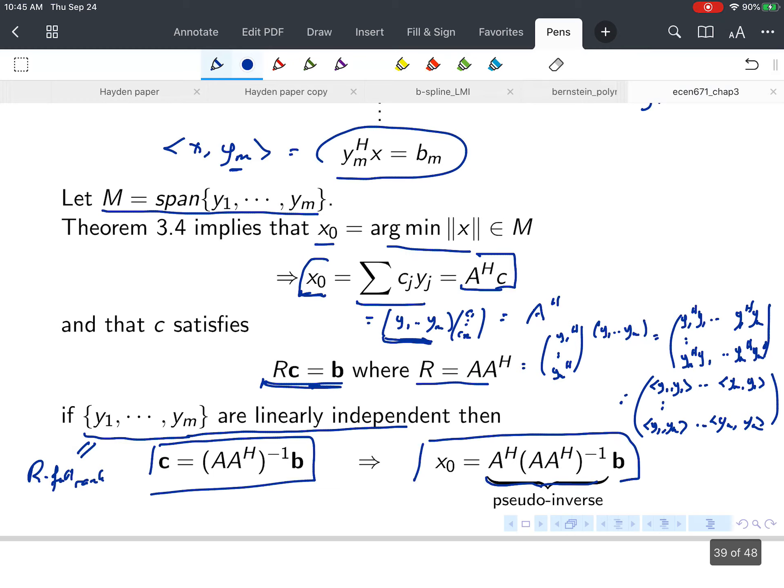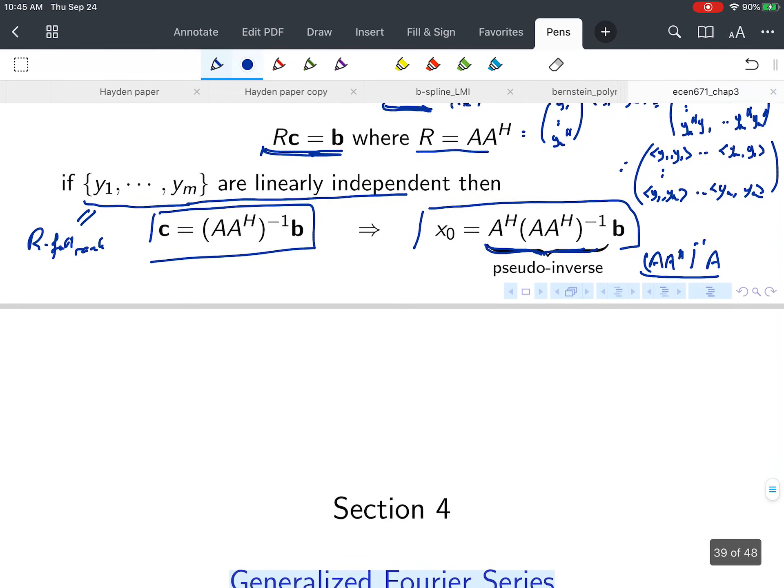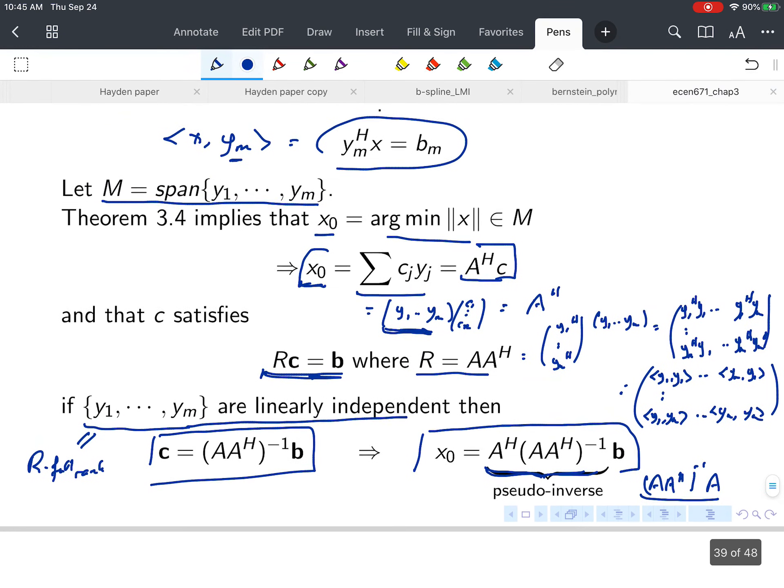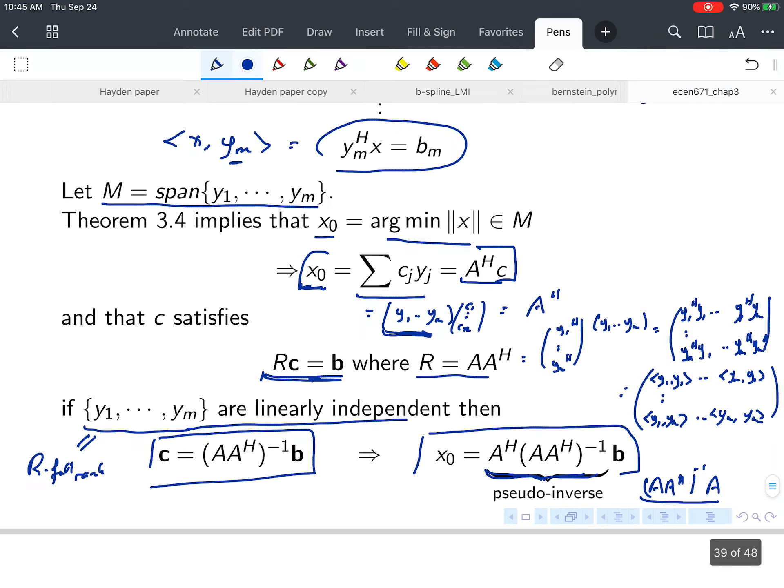Previously we saw the pseudo-inverse (A^H A)^(-1) A^H associated with least squares and overdetermined problems. Here we have the pseudo-inverse A^H(AA^H)^(-1) for underdetermined or min-norm problems. That's the end of this segment.